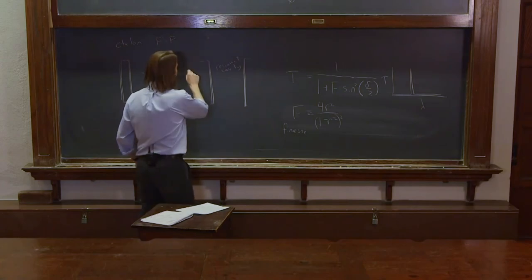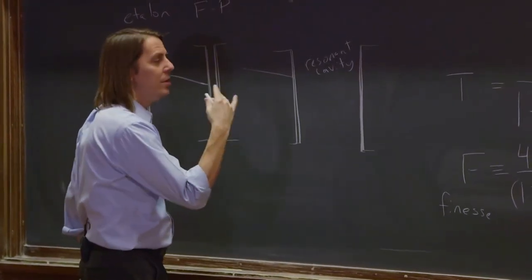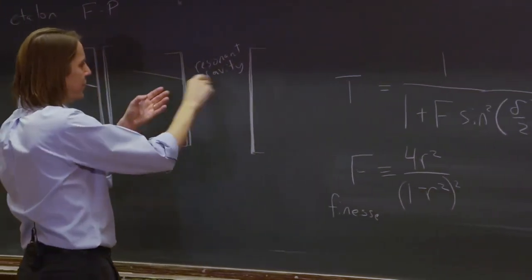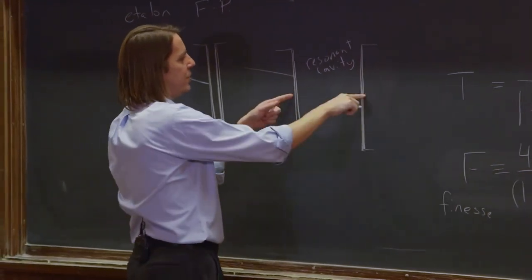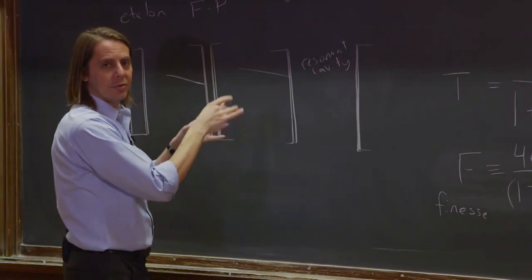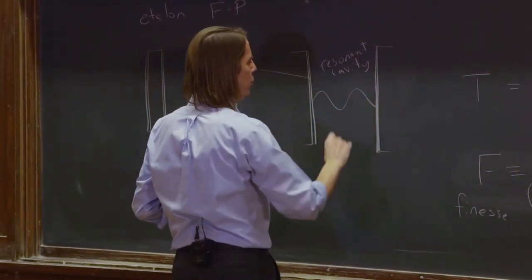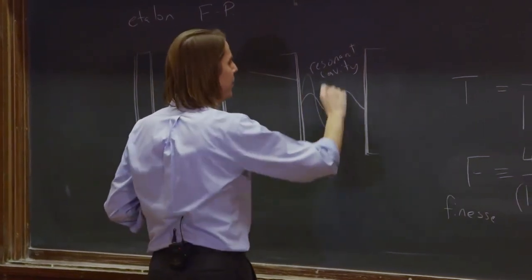So when you send light in, most of the light bounces back, doesn't get through. But there's one special wavelength, which we've now thought about, one where you get constructive interference across the cavity between the reflections here and the reflections here. Then it does go through because everything adds up. So that actually is also the place where you can kind of draw normal modes fitting inside the cavity. And they actually get, you know, very large amplitude.